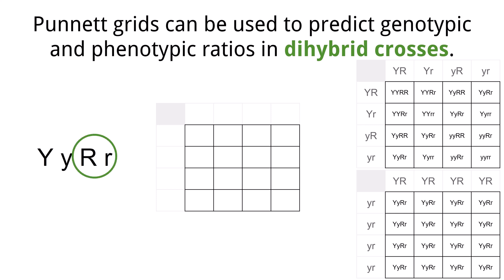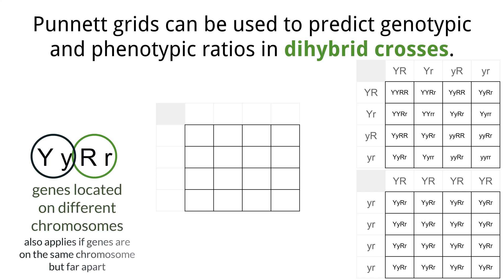Mendel's Laws only apply if the genes are located on different chromosomes. The gene for the color of the pea is located on one chromosome, while the gene for wrinkled or round is on another chromosome. It can also apply if the genes for the traits are on the same chromosome but far enough apart that crossing over or recombination can apply.